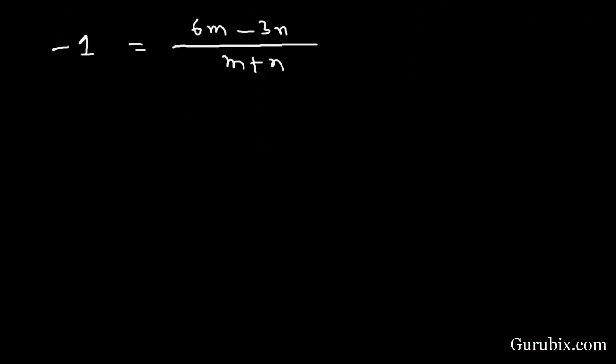We shall cross multiply this value. Then we have -m - n equals to 6m - 3n. Then -7m is equals to -2n. We can cancel out minus with minus.